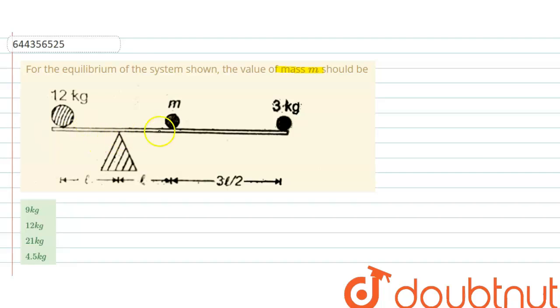This is an equilibrium system, so net torque about any point should be equal to zero. Let's take point O here. Net torque due to the weight of these masses about O should be equal to zero for equilibrium condition.